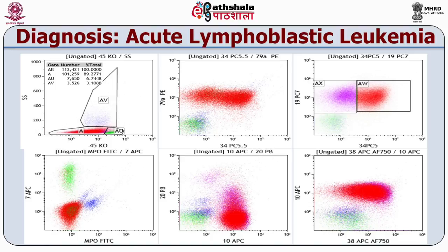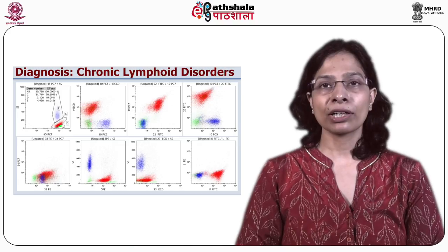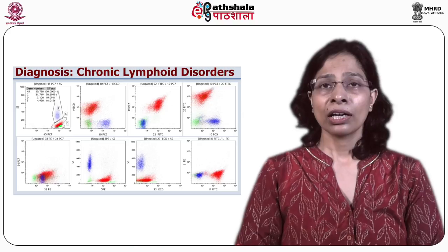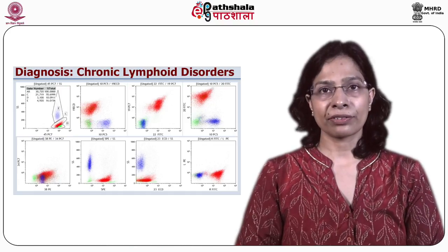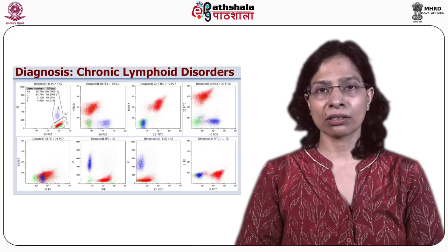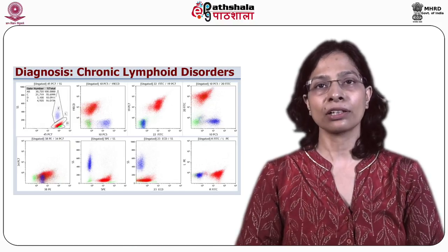This example shows how a diagnosis of B acute lymphoblastic leukemia is made. The blasts are gated using the CD45 antibody, and expression of CD34, a marker of immaturity, and CD79A, a marker of B cells, confirms B acute lymphoblastic leukemia. Similarly, for chronic lymphoid disorders, dual expression of CD5 and CD19 on the population of interest, along with other B cell markers, helps make a diagnosis of chronic lymphocytic leukemia.